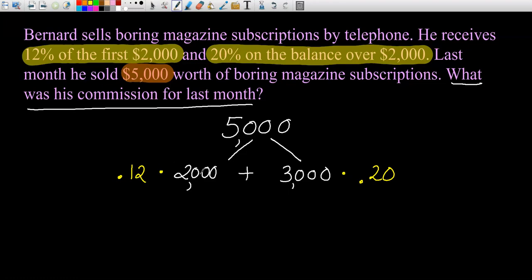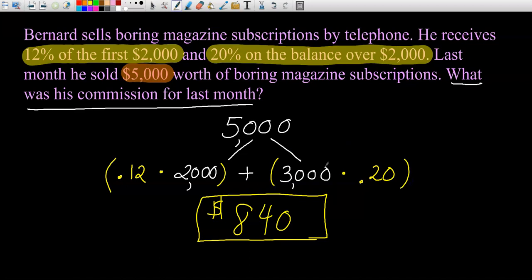12% is 0.12, so he gets 12% on the first $2,000 plus on this $3,000, he gets 20%, which is 0.20. We can actually enter this whole thing into a calculator. What I'm going to do is go 0.12 times 2,000 plus 0.20 times 3,000. When you multiply, the order doesn't matter. Let me punch this in: 0.12 times 2,000 plus 0.20 times 3,000. And that's going to be $840. So that is how much Bernard made last month.